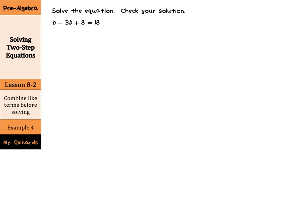Speaking of complicated, we have to combine like terms here before solving. We have b minus 3b plus 8 equals 18. Now before we add or subtract anything from both sides, we want to make sure all of our terms are combined. So we have b minus 3b here. 2b or not 2b. And actually it's a negative 2b, because 1 minus 3 is negative 2. Plus 8 equals 18.